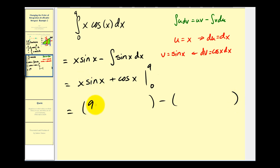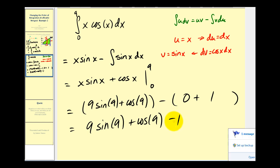We're going to evaluate this at nine and zero. So we'll have nine sine nine, plus cosine nine, minus zero times sine zero, that's going to be zero, plus cosine zero is actually one. So we have nine sine nine, plus cosine nine, minus one. And that'll do it for this video.